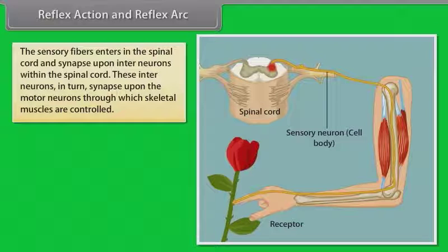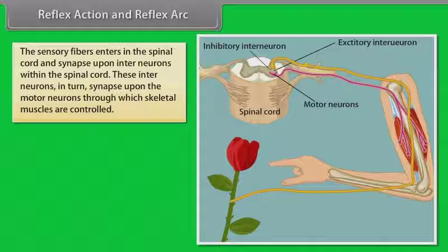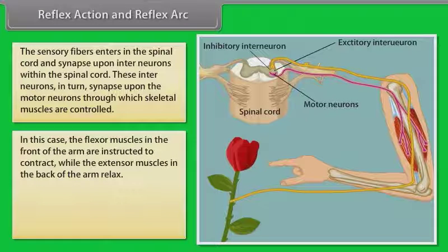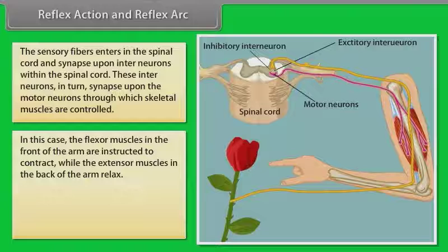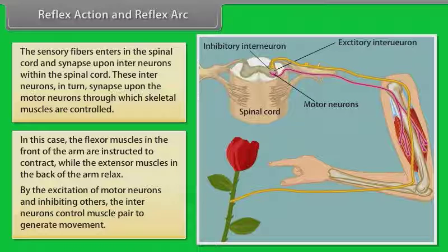The sensory fibers enter the spinal cord and synapse upon interneurons within the spinal cord. These interneurons in turn synapse upon the motor neurons through which skeletal muscles are controlled. The flexor muscles in front of the arm are instructed to contract while the extensor muscles in the back of the arm relax. By exciting some motor neurons and inhibiting others, the interneurons control muscle pairs to generate movement.